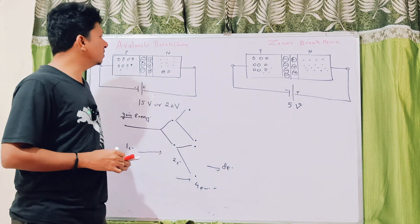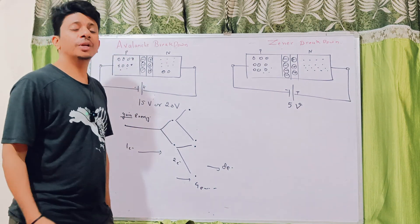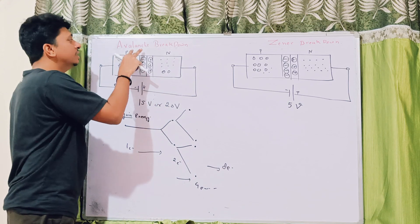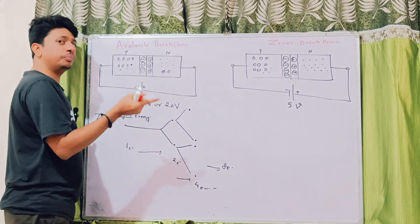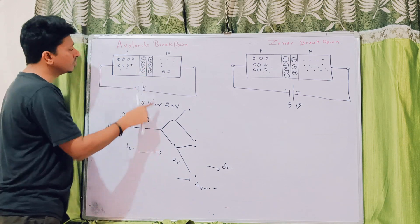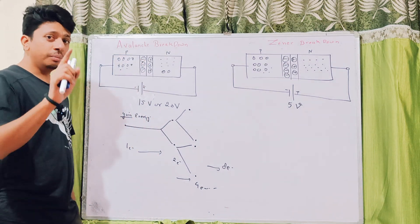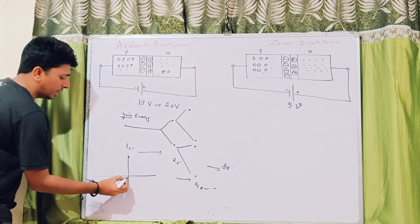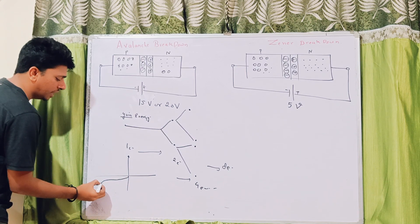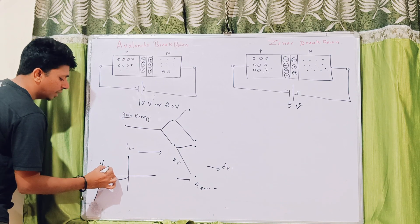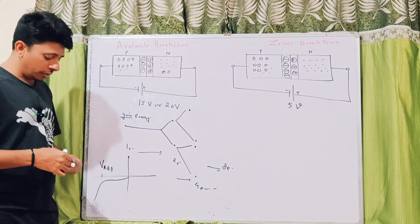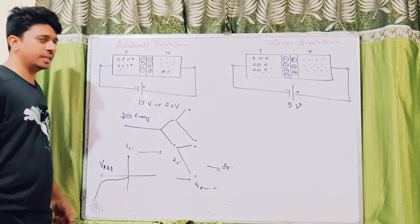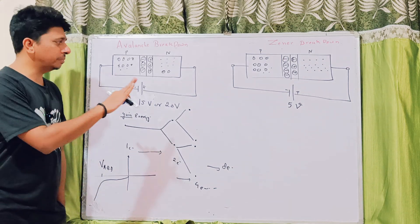People will ask you: do you know what is the avalanche process? This is called the avalanche process, where because of this avalanche process inside the P-N junction under reverse bias condition at very high voltage, what is known as avalanche breakdown occurs. Because of this breakdown, when we draw the IV curve, we get this type of curve — at very high voltage the current will start, and this is called the avalanche breakdown voltage.